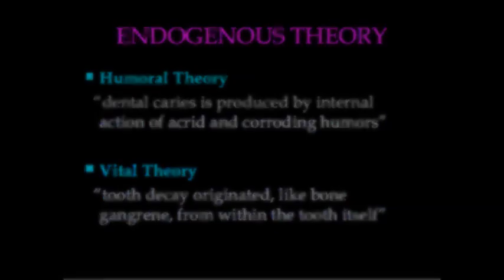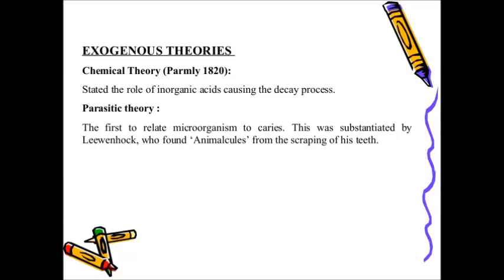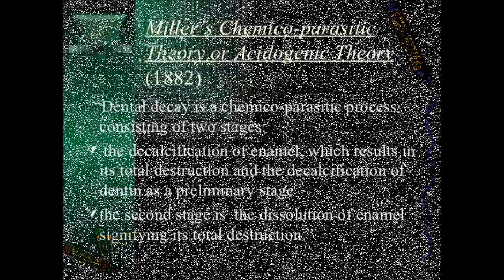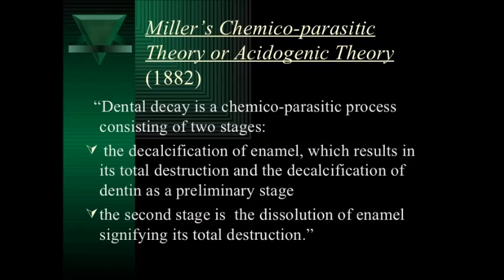Then the chemical theory and parasitic theory, which come under the exogenous theory. According to the chemical theory, an unidentified chemical agent was responsible for caries. Parasitic theory stated that living microorganisms caused the disintegration in both enamel and dentine. Next is Miller's chemico-parasitic theory, or acetogenic theory. According to this theory, dental decay is a chemico-parasitic process consisting of two stages: the first stage is decalcification of enamel, and the second stage is the dissolution of the softened enamel, signifying its total destruction. This theory is the backbone of the current knowledge of understanding the etiology of dental caries.